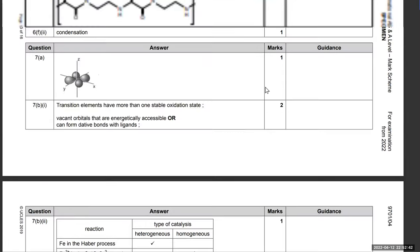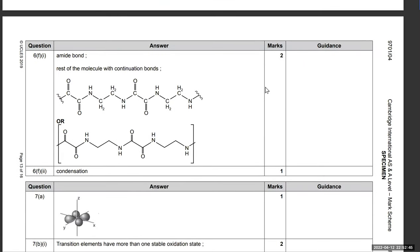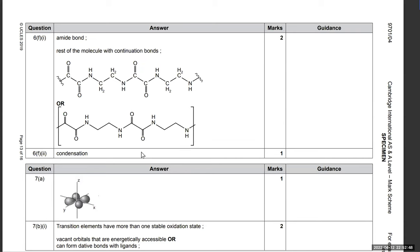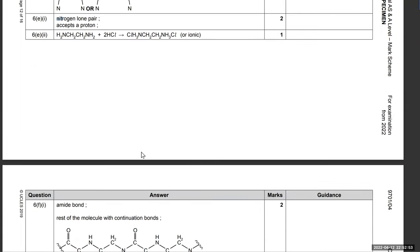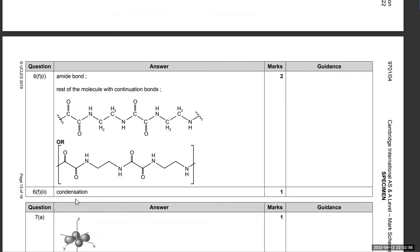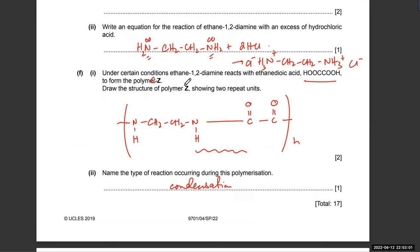The type of reaction is condensation — a water molecule is produced as a result. They wanted two repeat units shown, so you extend the structure and repeat it again. Make sure you draw two repeat units — the second is just a continuation of the same thing.